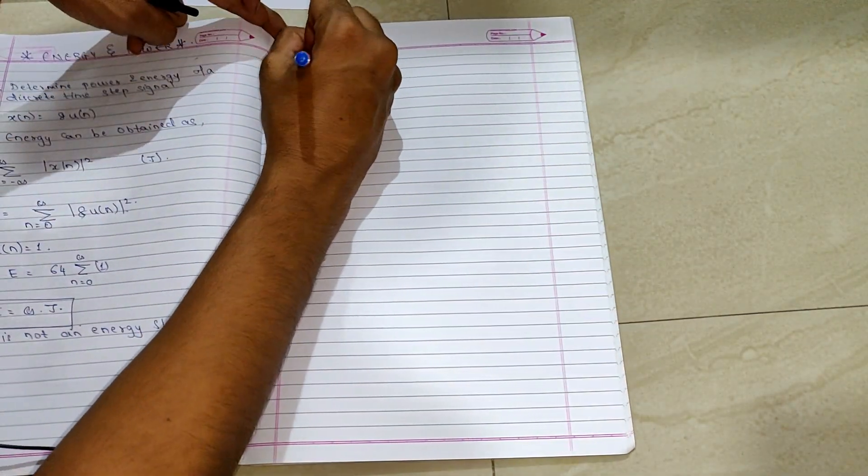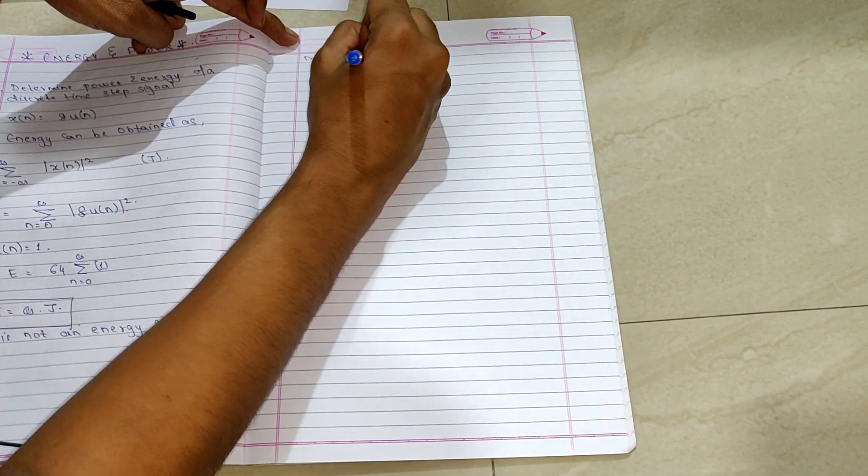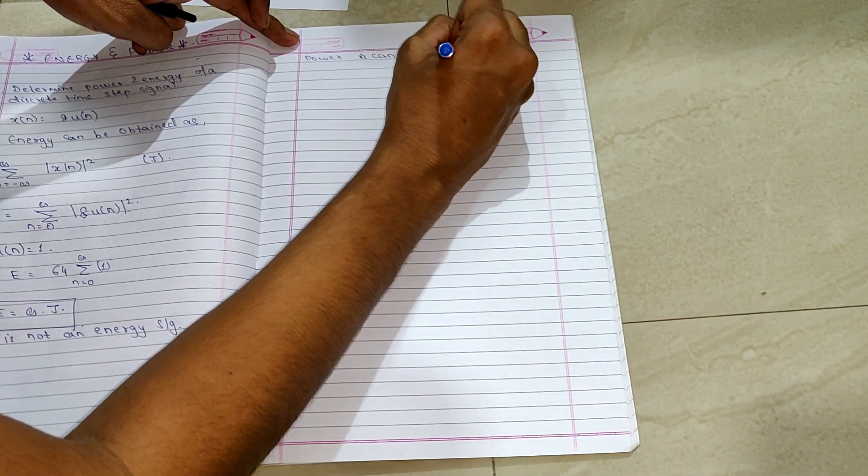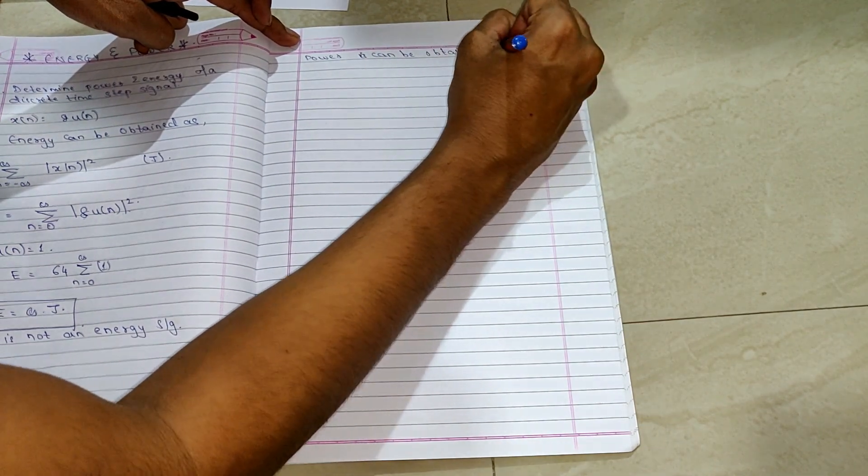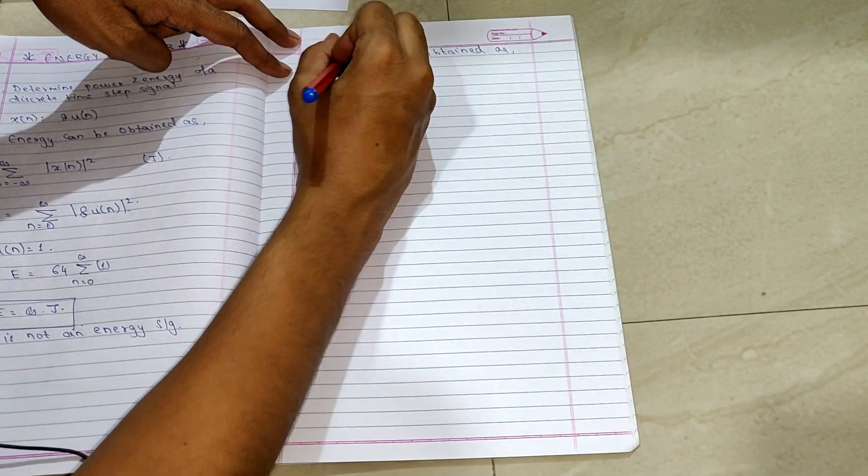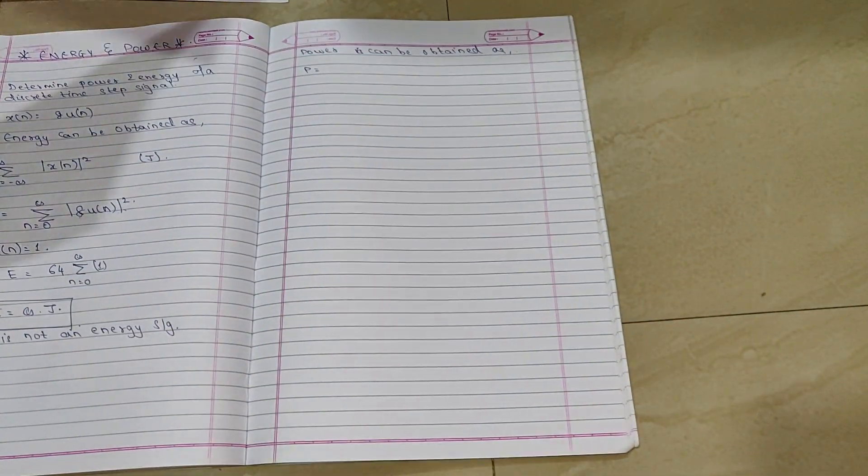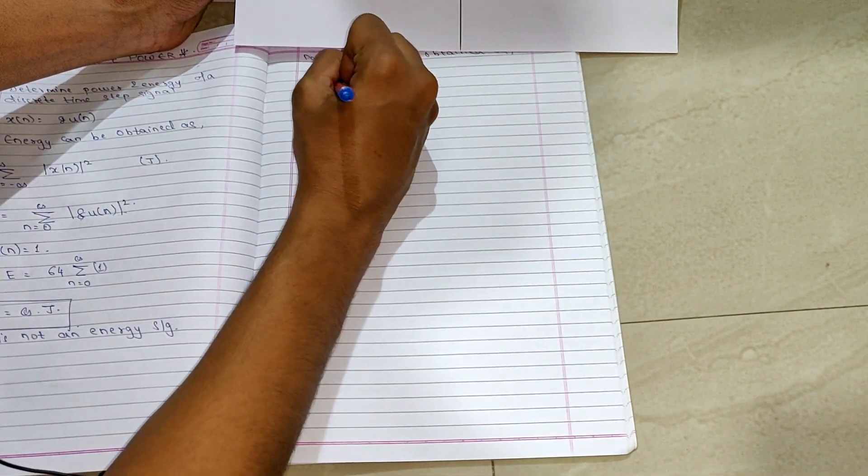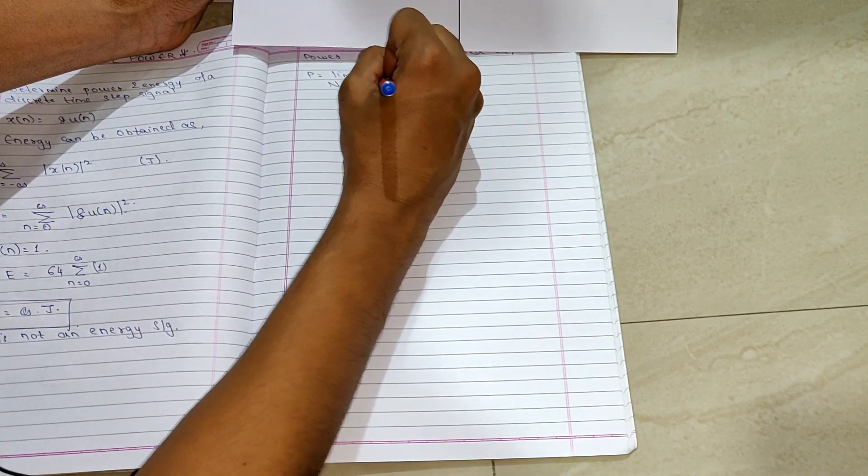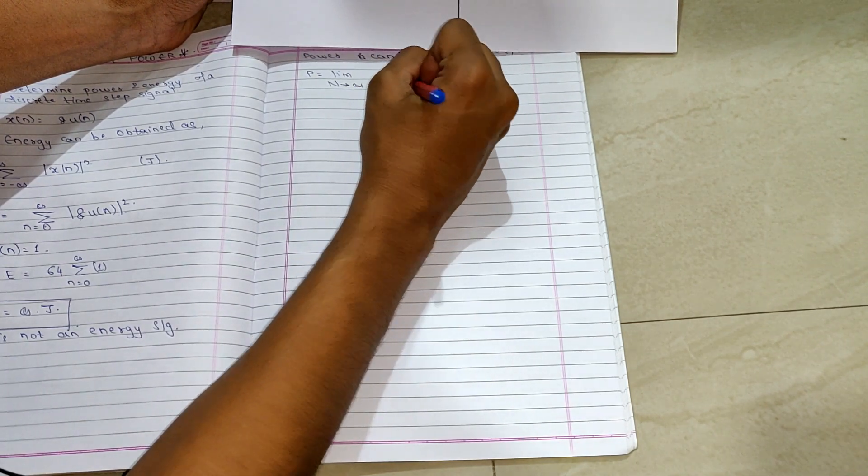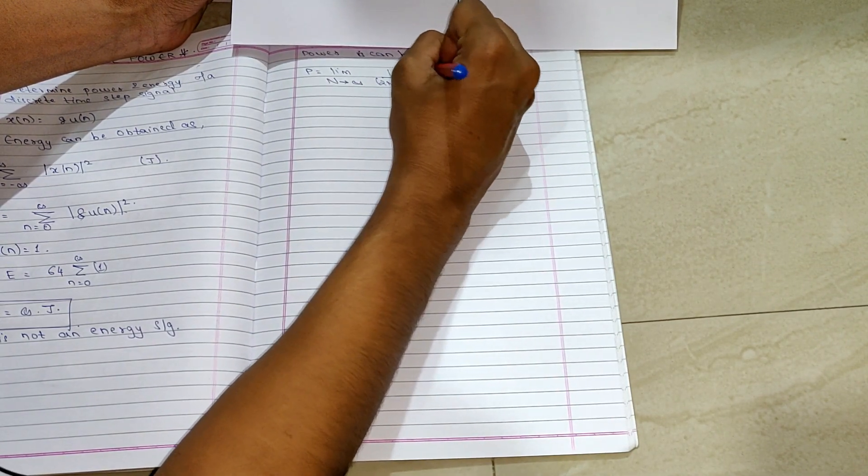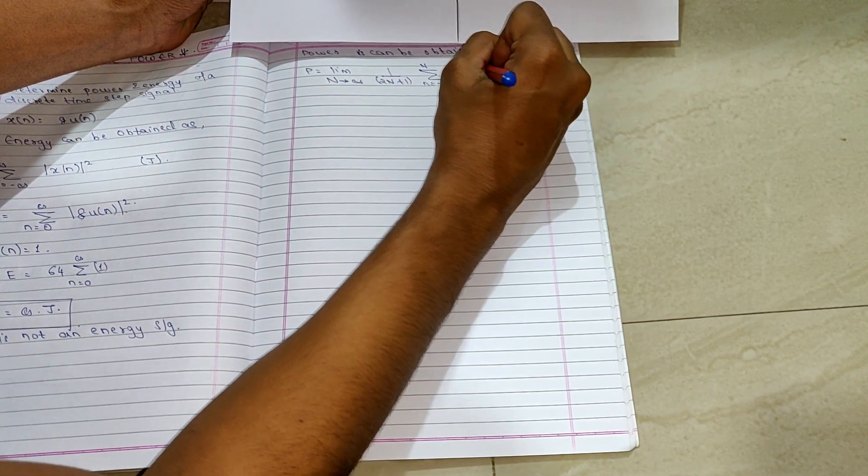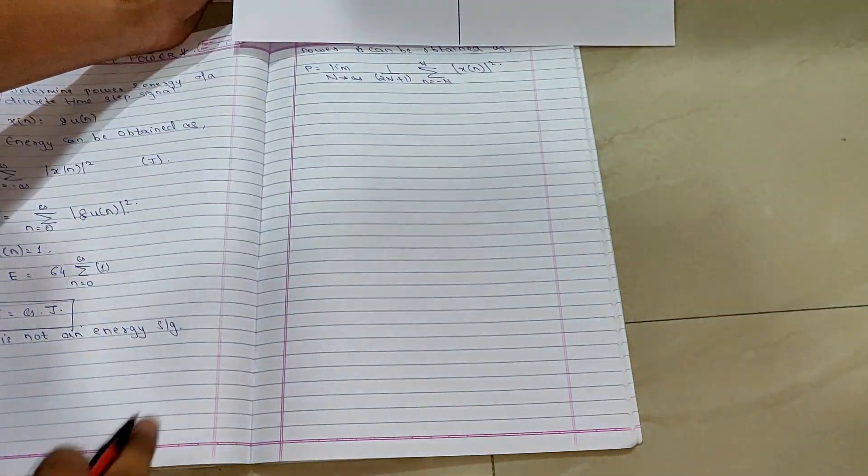Now let us help with the power. So the power can be obtained as the formula for power is limit of n tends to infinity, 1 upon 2n plus 1. Summation of n minus n to n, x raise to n mod the whole square.